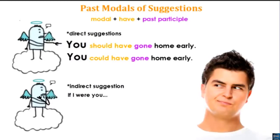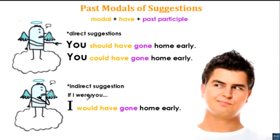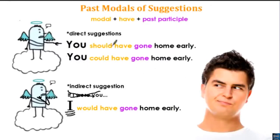When using an indirect suggestion with 'would have,' I'm almost pretending to be the person. For example: 'Personally, if I were you, I would have gone home early.' The key point: 'would have' is hypothetical — I'm pretending to be in that person's shoes. I always use 'I' with 'would have' because it's hypothetical. With 'should have' and 'could have,' I always use 'you' because it's a direct suggestion.